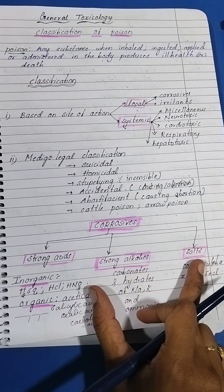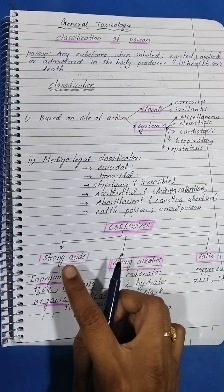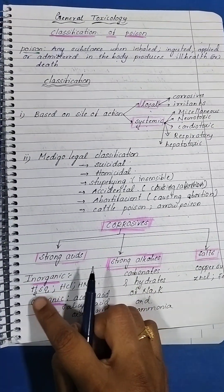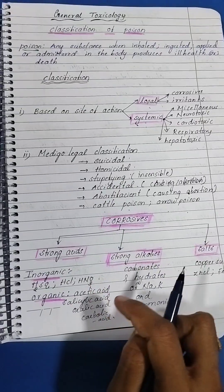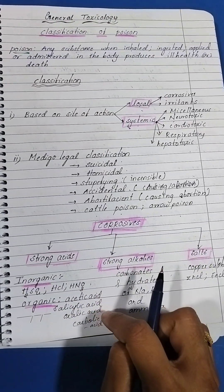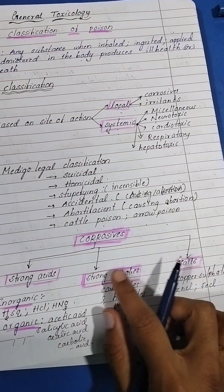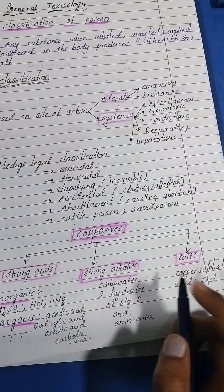In inorganic we have H2SO4, HCl, HNO3, acetic acid, salicylic. In organic we have acetic acid, salicylic acid, oxalic acid, and carbolic acid.